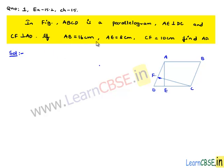If AB is equal to 16 cm, AE is equal to 8 cm, CF is equal to 10 cm, find AD.